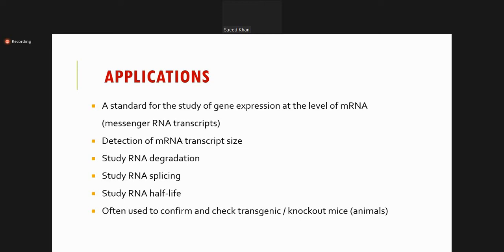The implications of Northern blot include detecting RNA and finding the meaning of RNA detection. You can detect the messenger RNA transcript size — how big or small it is — and study RNA degradation, how long the RNA survives. Splicing phenomena — the cutting and RNA maturation — can also be identified. We can study the half-life of RNA and find if a gene has been knocked out. Knockout mice mean a particular gene is removed; to confirm, we need to detect its RNA. We can also study the effect of a drug on a particular gene using this technique.